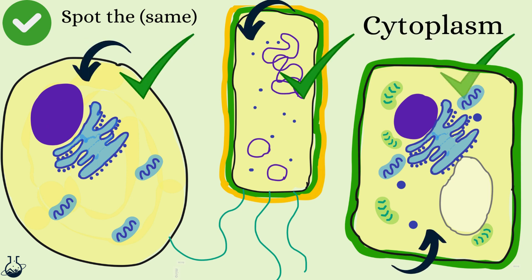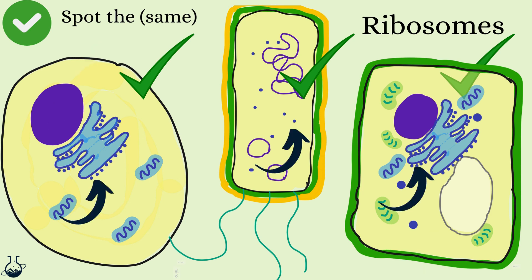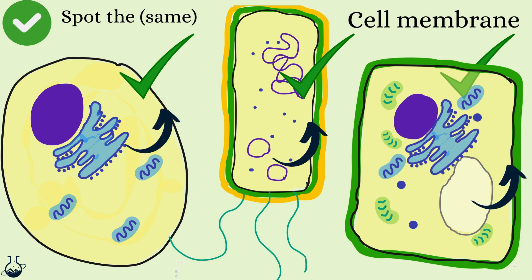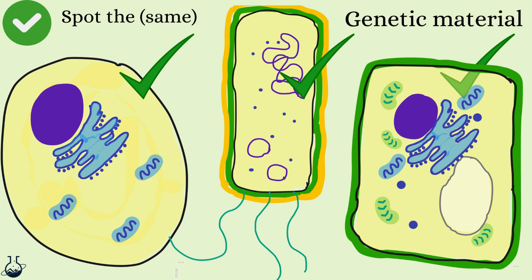So firstly, they all have a cytoplasm — the jelly-like fluid where many chemical reactions of the cell take place, shown by the pale background. They all have ribosomes for protein synthesis, shown by these small spots. Eukaryotic ribosomes are larger than prokaryotic ones though. They all have a cell membrane to control the entry and exit of substances into and out of the cell, shown by this solid black line. And they all have genetic material that holds the code to build proteins.